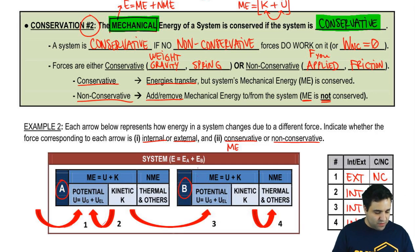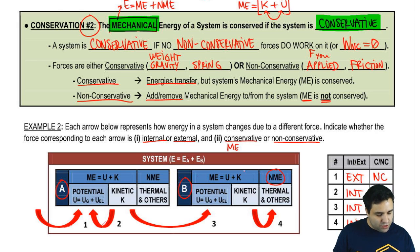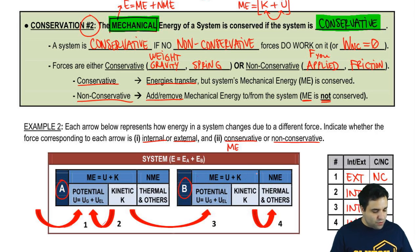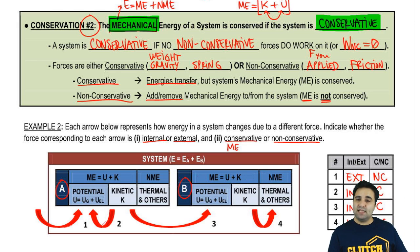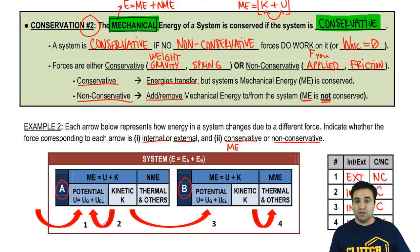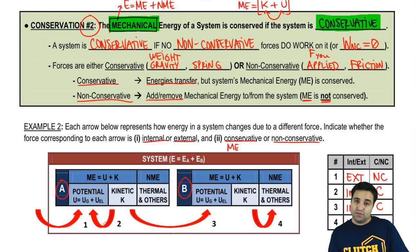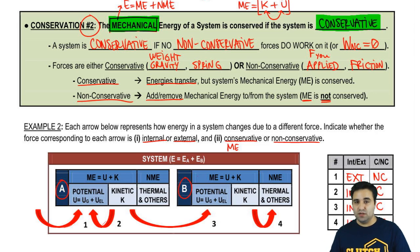For force four, just within object B, kinetic energy is being transferred into non-mechanical types of energy. So you're losing some mechanical and gaining some non-mechanical. Because you're losing mechanical energy, this is non-conservative. That's the basic idea — so you understand the distinction between internal, external, conservative, non-conservative, and the rules that determine whether the mechanical energy of a system is conserved and the total energy of a system is conserved.